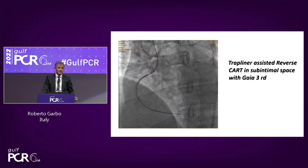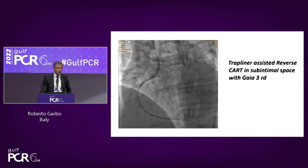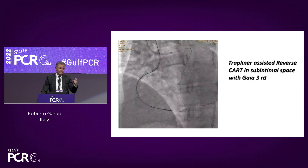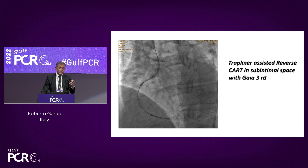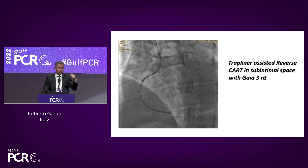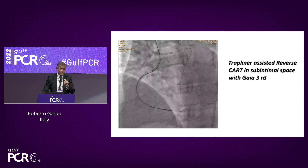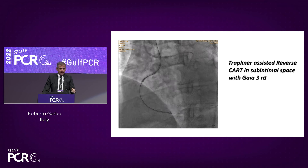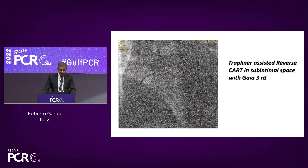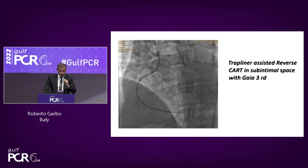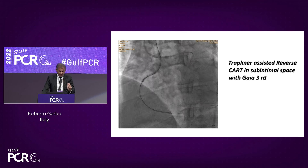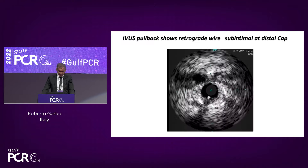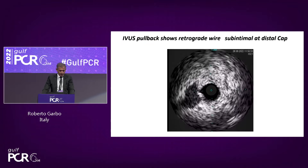Now with the guide extension, we put the Trapliner in the distal part of the right, make the connection there, and enter with the retrograde wire into the Trapliner distally. I performed a reverse cut in the sub-intimal space and was able to re-enter, as you can see, with the Gaia into the Trapliner. Then I performed externalization. This is the IVUS — only a small 2 mm balloon dilatation was needed to advance the IVUS. This is a Volcano IVUS — Philips Eagle Eye.